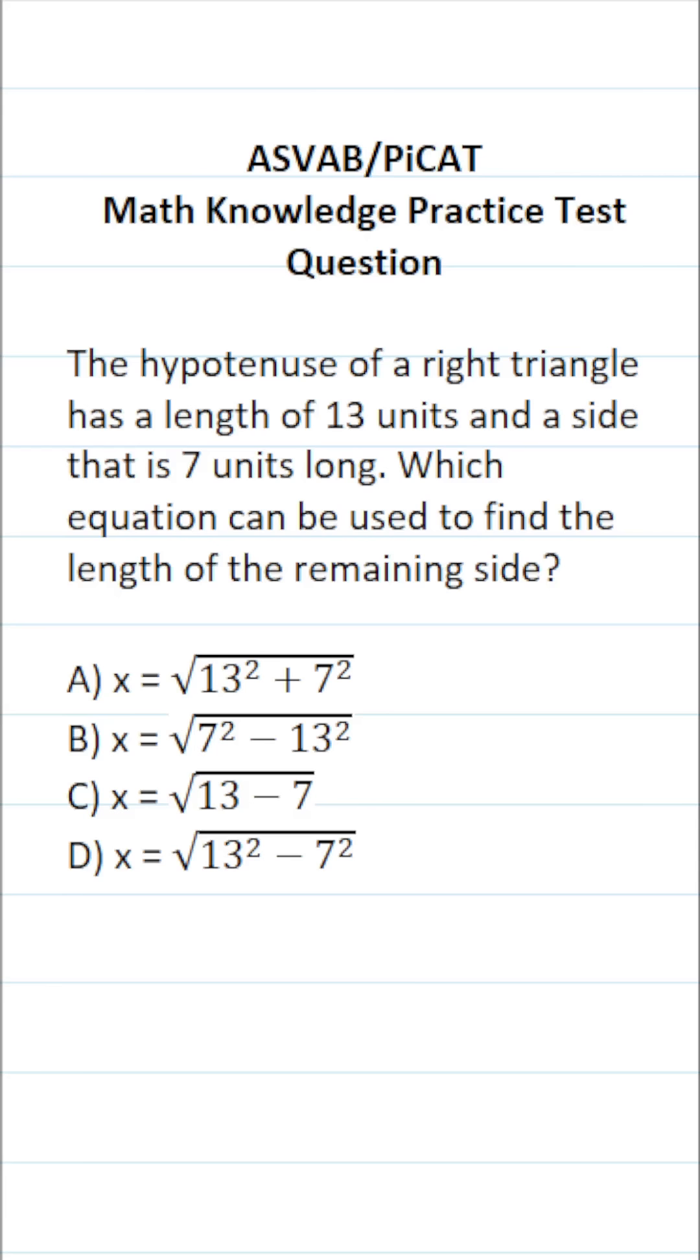Whenever you're dealing with right triangles, you should automatically think about using the Pythagorean theorem. Since you're not permitted to use a calculator or reference sheet on the actual ASVAB or PiCAT, you do have to commit this formula to memory.